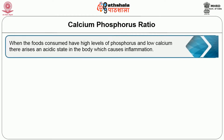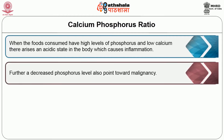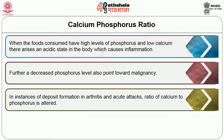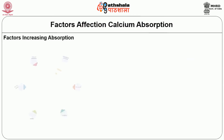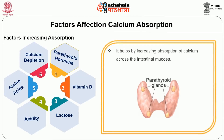When food consumed has high levels of phosphorus and low calcium, an acidic state arises in the body which causes inflammation. A decreased phosphorus level also points toward malignancy. In instances of deposit formation in arthritis and acute attacks, the ratio of calcium to phosphorus is altered. The net balance depends not only on absorption of mineral from the gut or retention or excretion by the kidney but also on bone turnover.